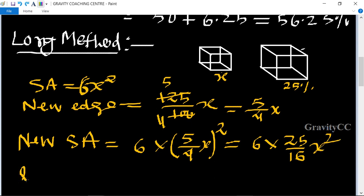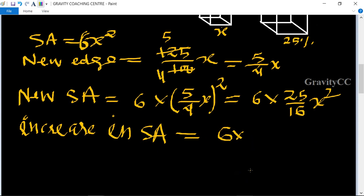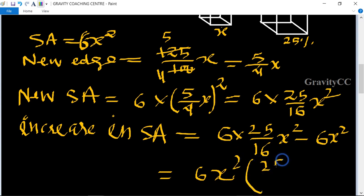Increase in surface area: 6 × 25x²/16 - 6x². Taking 6x² as common: 6x²(25/16 - 1) = 6x² × 9/16.